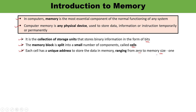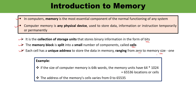How can we find out the address? Let me give you an example. Suppose the computer memory is 64K words. 1K equals 1024, so 64K equals 64 multiplied by 1024, which gives us 65,536. Therefore, the address of memory cells varies from 0 to 65,535.